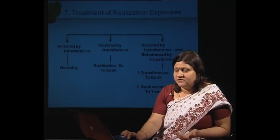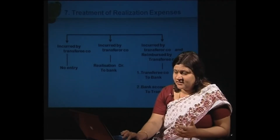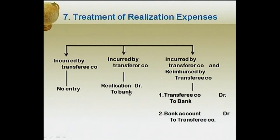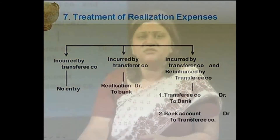If the realization expenses are paid by the transferor itself, the entry is: Realization Account debit, to Bank. Where realization expenses are incurred by the transferor and reimbursed by the transferee, two entries are passed: first, Transferee Company debit, to Bank; then when reimbursed, Bank Account debit, to Transferee Company. The expenditure is not directly recognized — instead, the bank account and transferee's account are used to settle the adjustment.